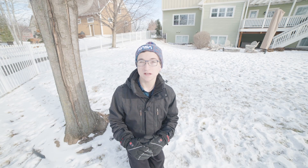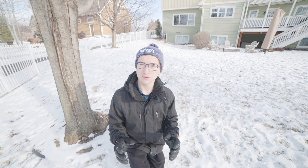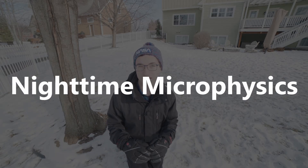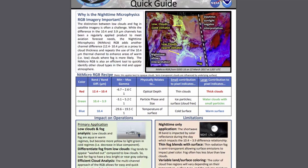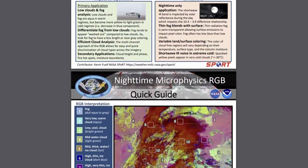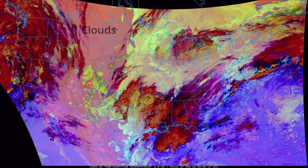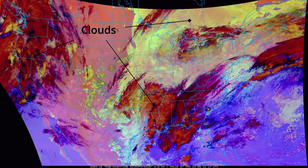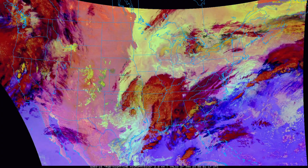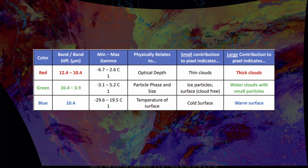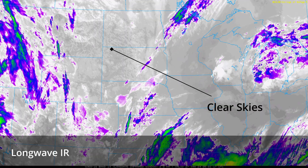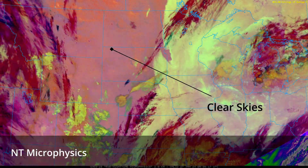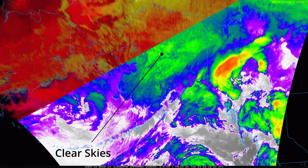With all the sources of data available to us astrophotographers, one really powerful tool I see not many people utilizing is called the Nighttime Microphysics Satellite. It's a multi-wavelength RGB product made from many different infrared bands. It can be used to differentiate clear skies from clouds, fog, rain, ground, and snow. Essentially, it uses different frequencies of light from satellites around the earth to determine the types of clouds in our atmosphere.